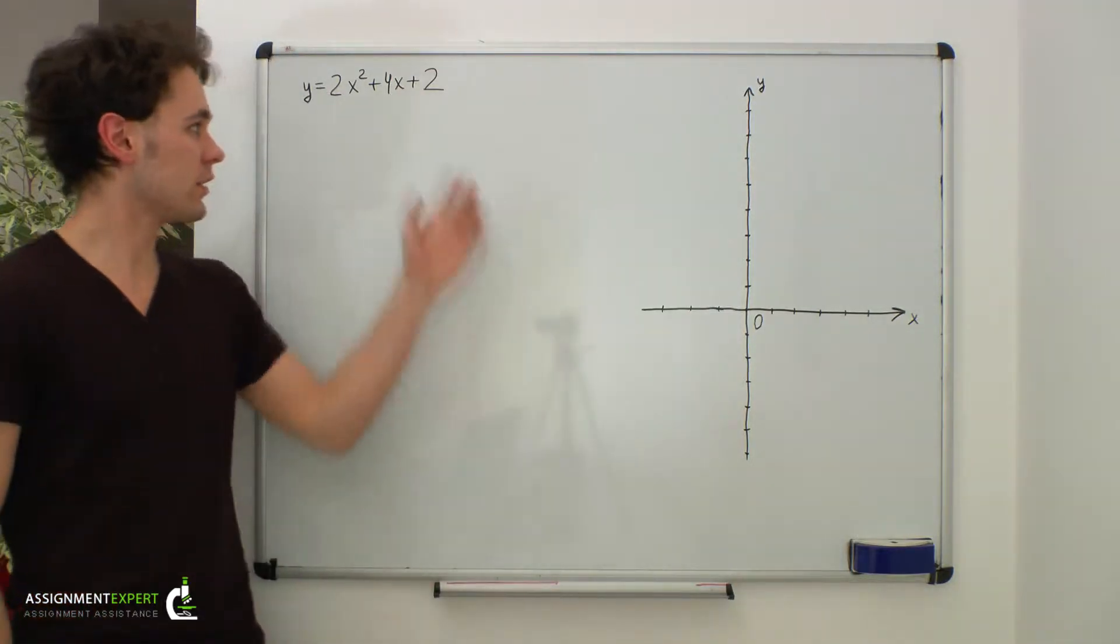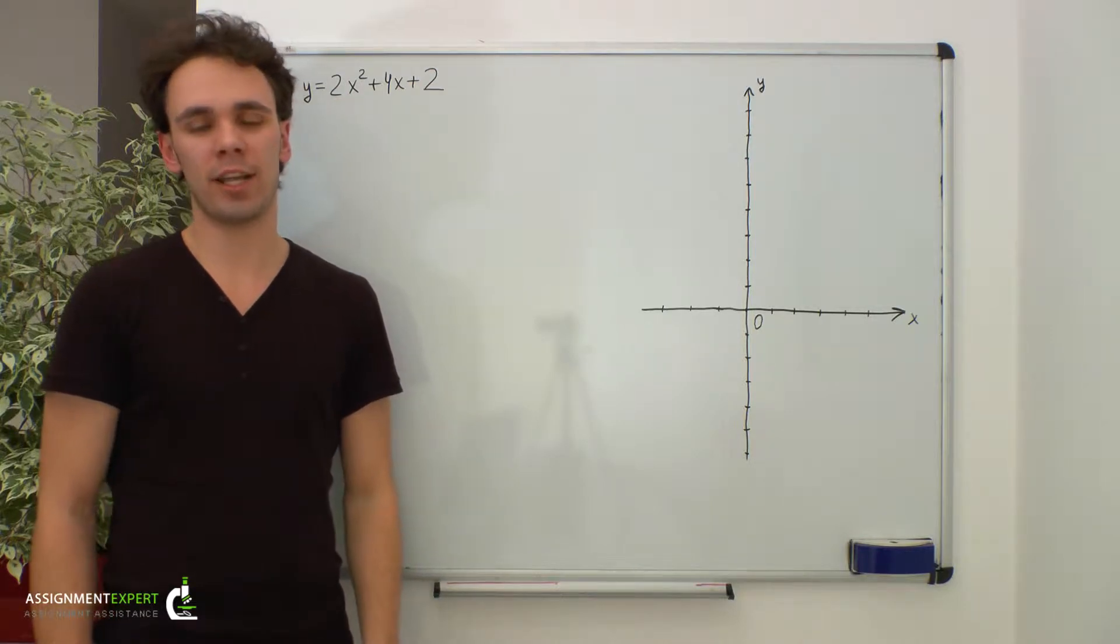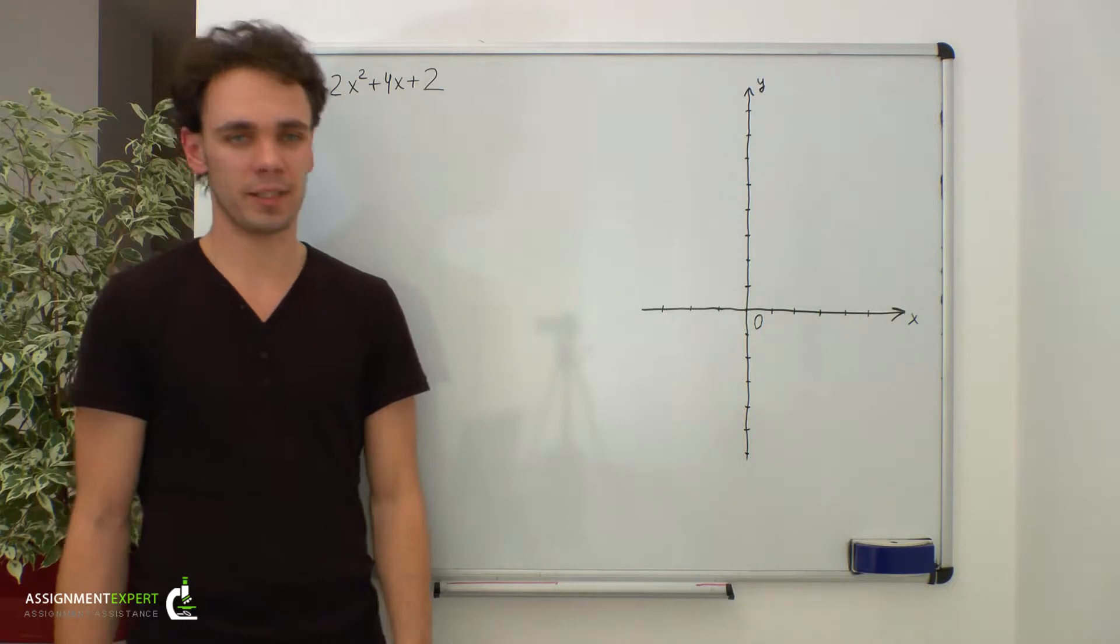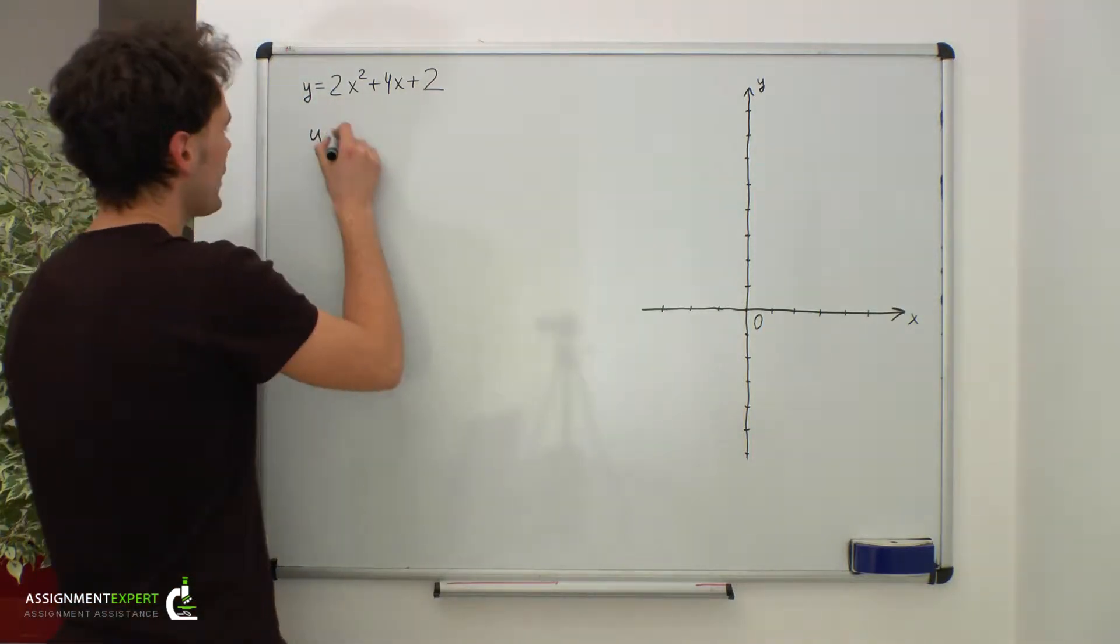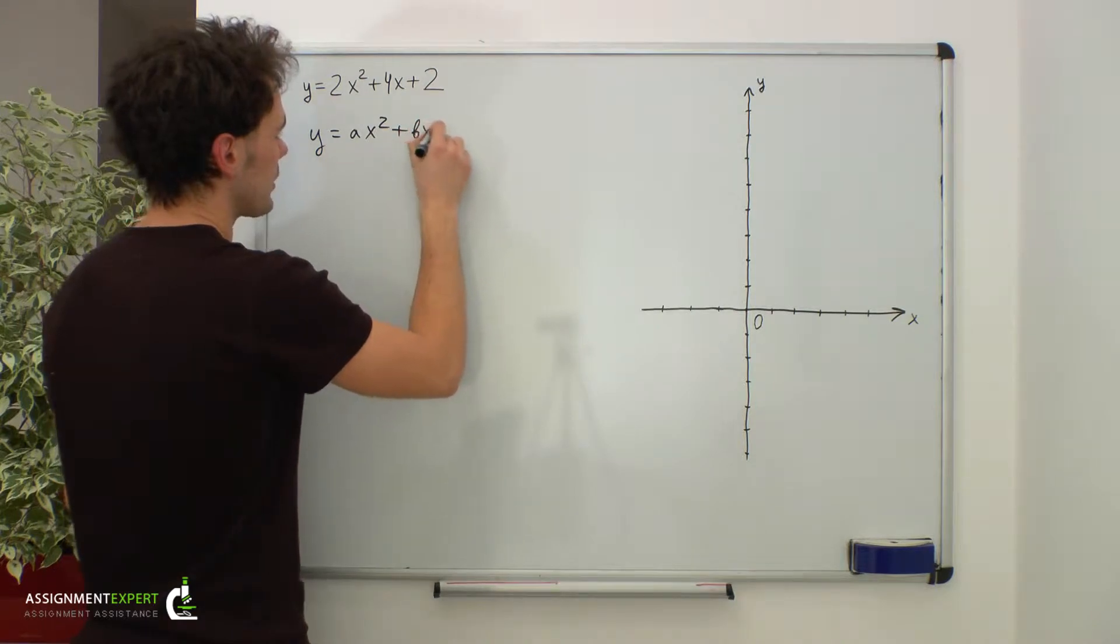Suppose we need to find the vertex of the given function and sketch its graph. This is a quadratic function. Recall that in general the equation of this function looks like this.